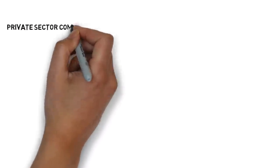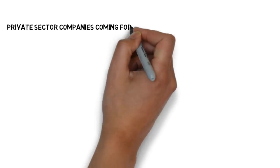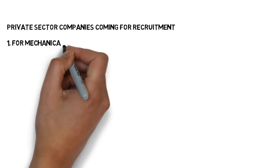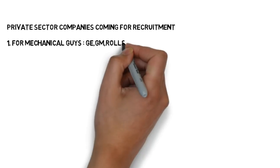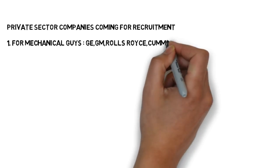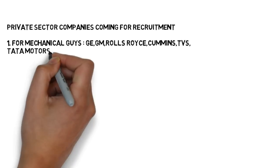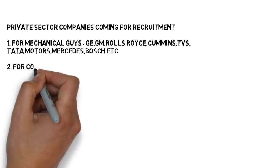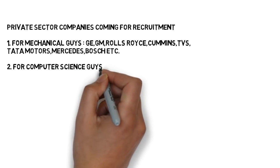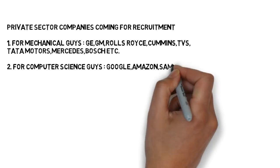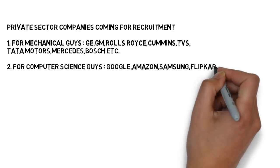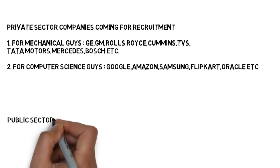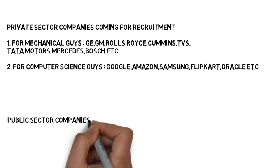Let's start with the private sector companies. The companies for mechanical guys that come for recruitment in M.Tech are like GM General Motors, GE General Electric, Rolls-Royce, then companies like Cummins, TVS, Tata Motors, Mercedes, Bosch, etc. Similarly for computer science guys, the companies that are coming is like Google, Amazon, Samsung, Flipkart, Oracle, etc. Similarly companies are there for electronics, civil, electrical.